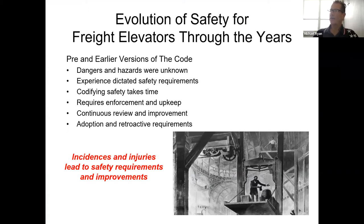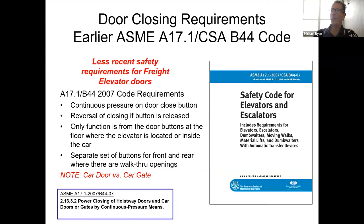That's really the first part of this presentation — the way it was, then we talk about the way it is today. ASME 2.13.3.2 — this is how freight doors were controlled initially. Constant pressure on the button to close the doors; if you reversed your finger on the button, the door reopened. Only the button at the door, at that floor, and on that side of the elevator would work that door.